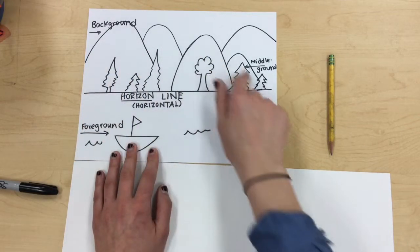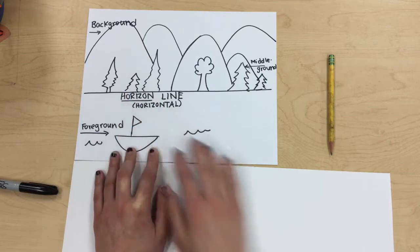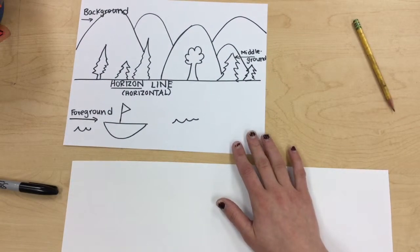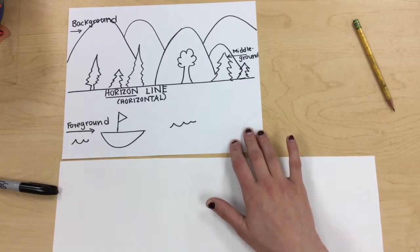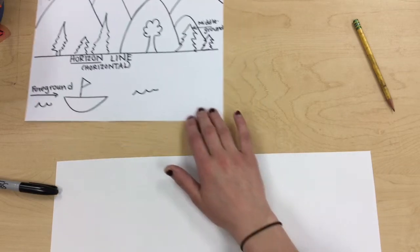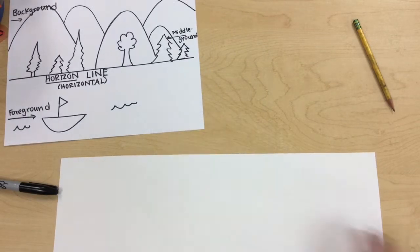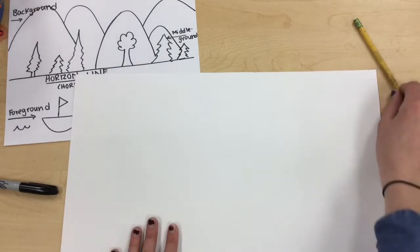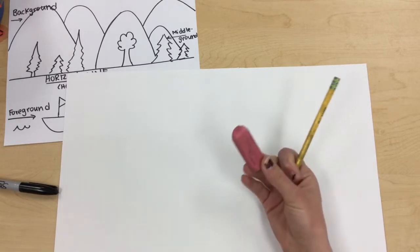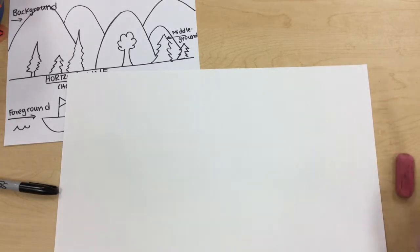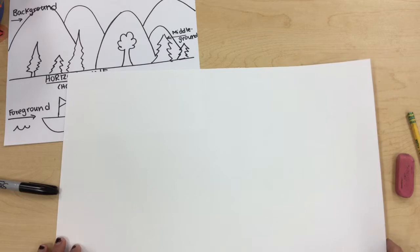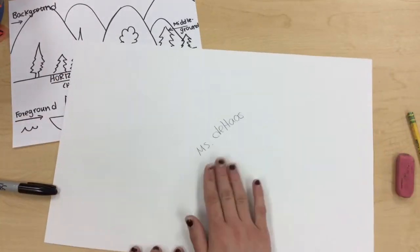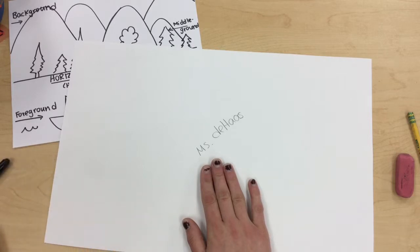So now that we know all of those art terms, I'm going to show you how to draw your landscape. So you're going to draw with me today, so make sure you are really focusing and listening. I'll leave that right there for us. The first thing we're going to do, I have given you your drawing paper, you should have a pencil and if you need to, you should have an eraser. I want you to first make sure that your name is on the back of your paper. So I've already written my name on the back of my paper.